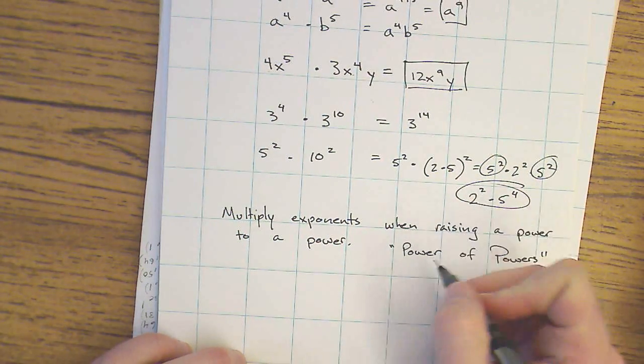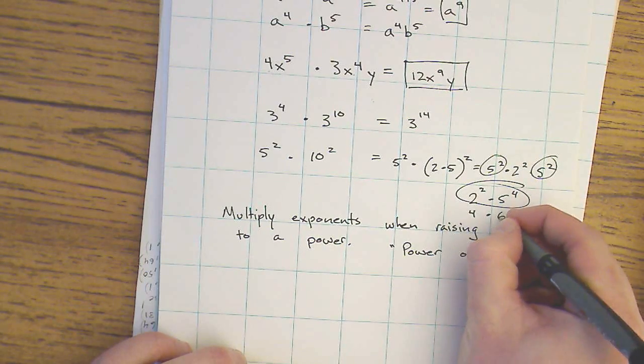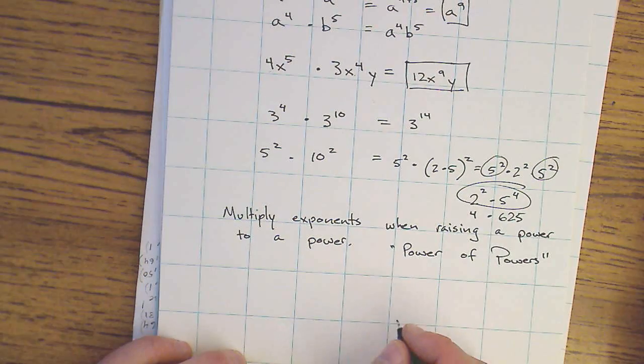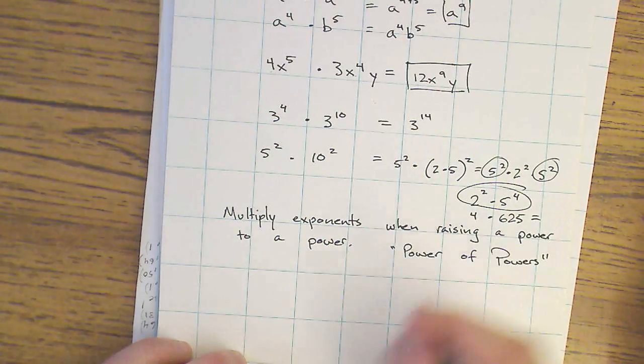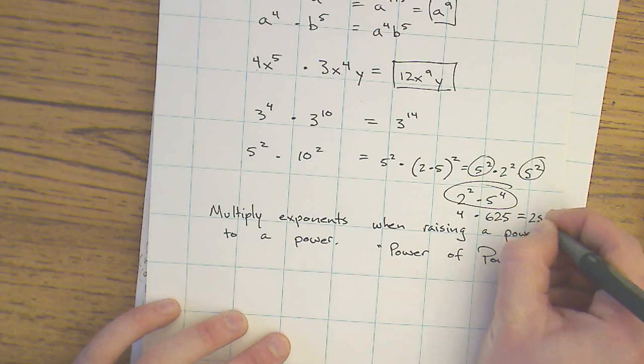I can solve that. 2 to the 2nd is just 4. 5 to the 4th is 625. And so 5 to the 2nd times 10 to the 2nd is going to give me 2500.